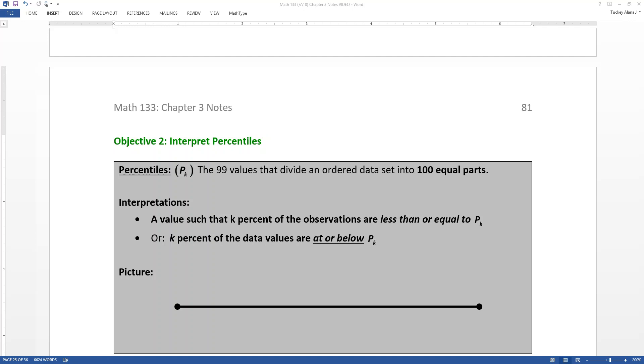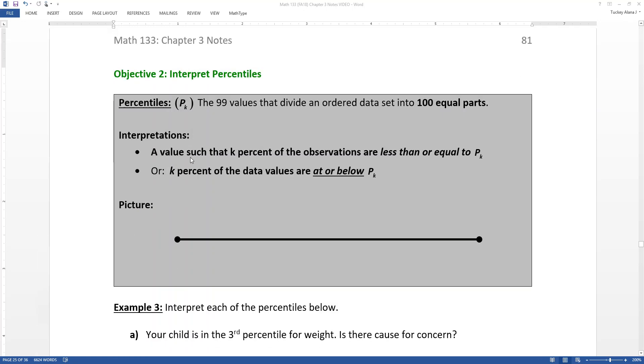The next measure of position that we want to learn about is percentiles. Percentiles take a data set and divide it into 100 equal parts. So you have 99 percentiles that separate the 100 areas, and each of those areas will have 1% of the data set.